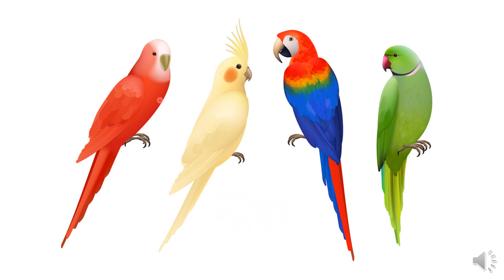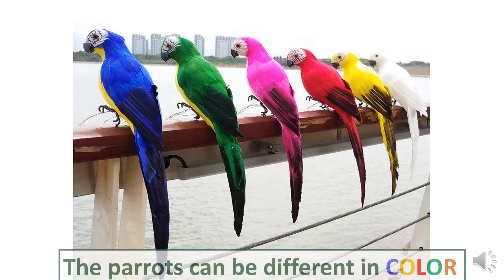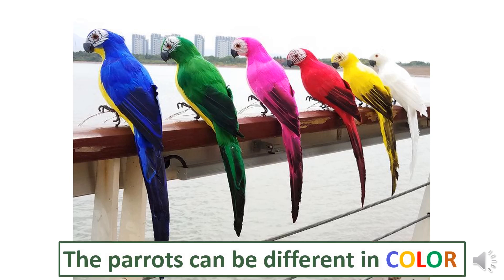Can you see differences among them? We have this one that is red and this one that is white. This one is green and this one is colorful — this bird, we call the parrot. Look at this picture, too. We have different colors of the same bird. So the parrots can be different in color.